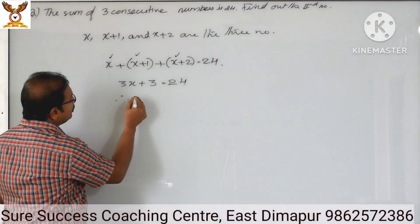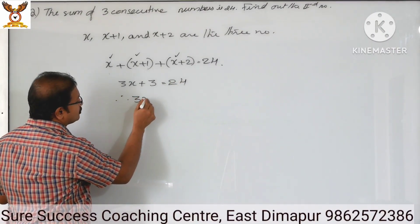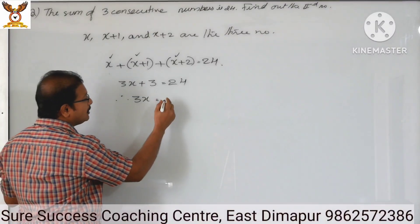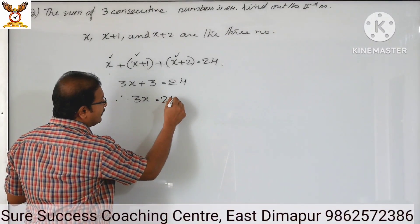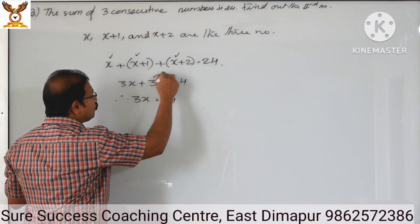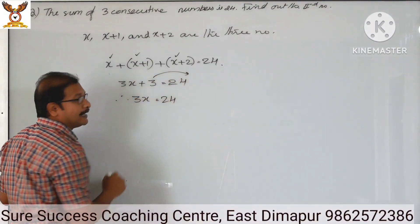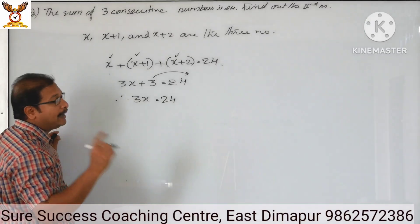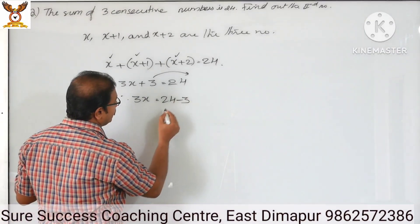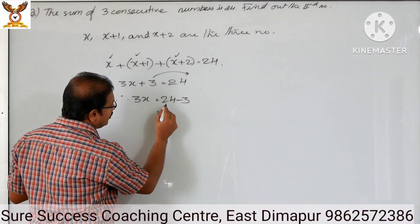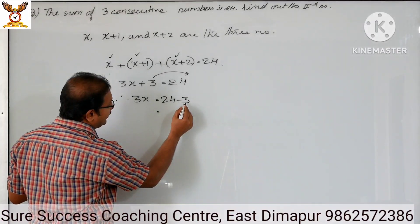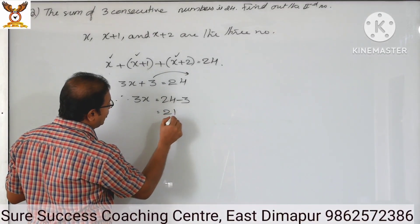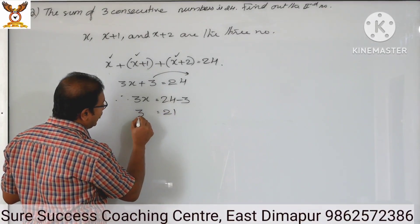Therefore, 3x equals — we want the value of x — so 3 goes to the next side, plus 3 goes to the next side as minus 3, equals 24 minus 3, that is 21. That is 3x equals 21.